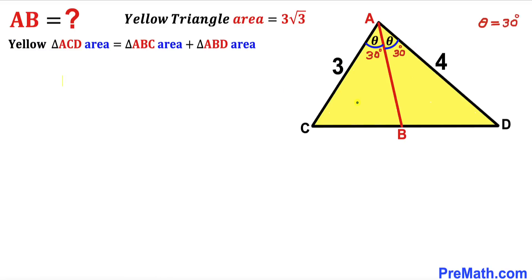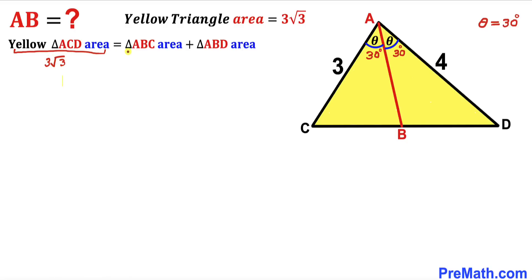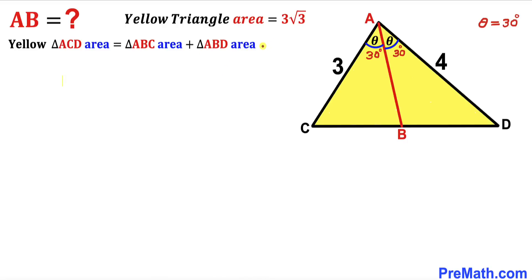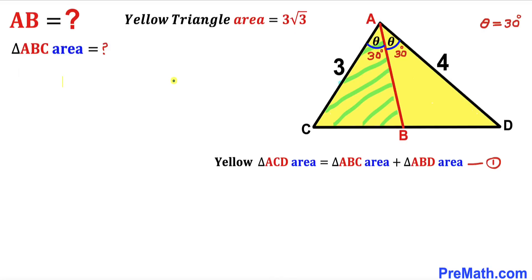Here's our next step. We observe that the area of the whole yellow triangle ACD equals the area of triangle ABC plus the area of triangle ABD. The area of triangle ACD has been given as 3√3, but we don't yet know the areas of triangles ABC and ABD. Our task is to calculate both. Let's label this as equation number 1.